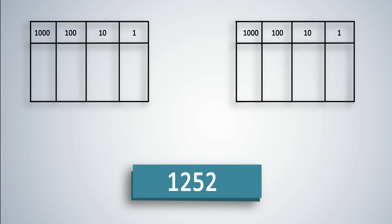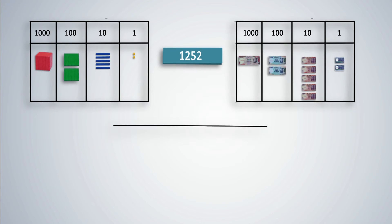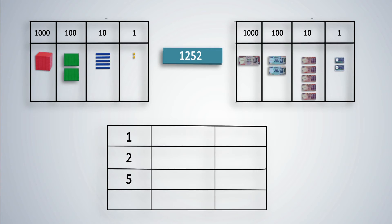Now students will be ready to learn about the difference between place value and face value. Ask students to depict 1,000, 200, and 52 with base 10 blocks or with play money. As the name suggests, the face value of a digit is the digit itself. To find the face value of 2, count the number of cubes or 1 rupee notes. The answer is 2. So the face value is 2.